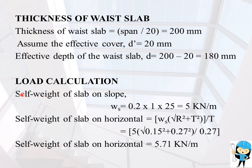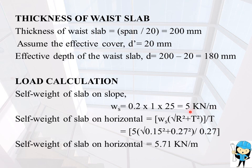Next is load calculation. Self weight of slab on slope WS equals 0.2 into 1 into 25, where 0.2 is the thickness of the waist slab and 1 meter is taken for design purpose, giving WS equals 5 kN per meter. Self weight of slab on horizontal equals WS into root of (R² + T²) divided by T, which is 5 into root of (0.15² + 0.27²) divided by 0.27, giving 5.71 kN per meter.